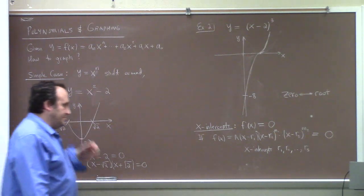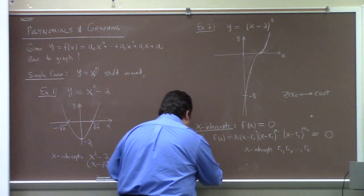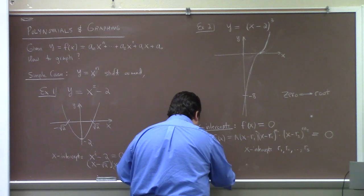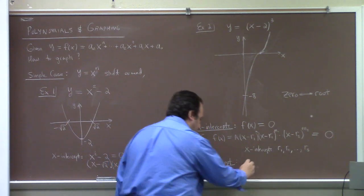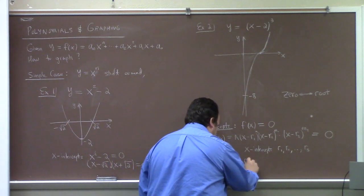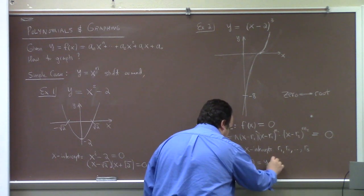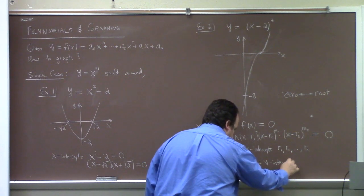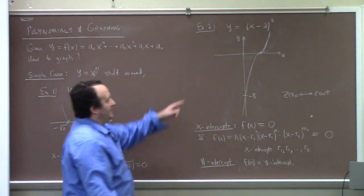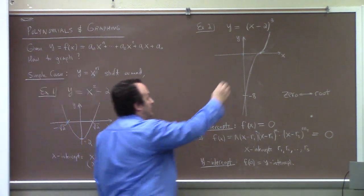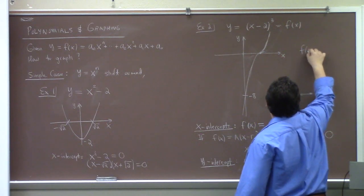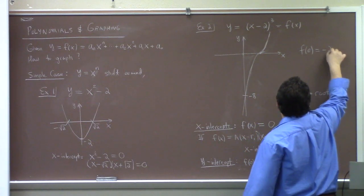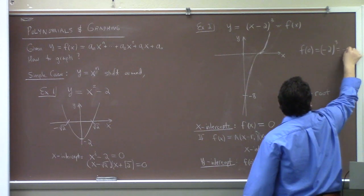The y-intercept is found by setting x = 0: f(0) is the y-intercept. That's how you figured out -8 earlier — you calculated f(0) = (-2)³ = -8.